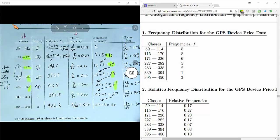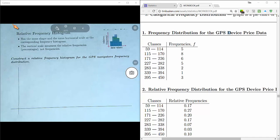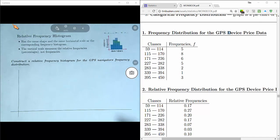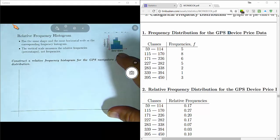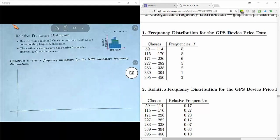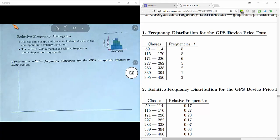So then to graph that table, the relative frequency distribution table, we graph that as a relative frequency histogram. Just another bar chart. And the relative frequency histogram has the same shape and same horizontal scale as the frequency histogram.